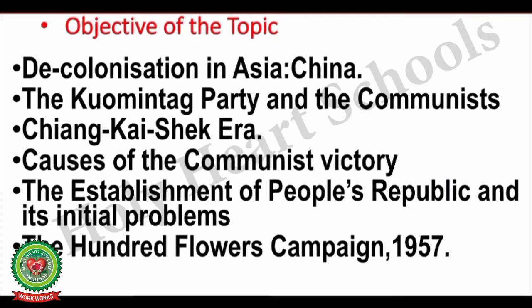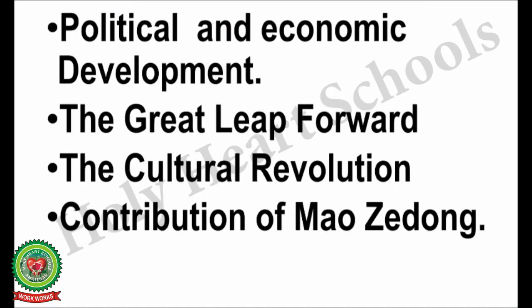Before we start, we will understand the objectives of the topic. The objectives are to understand decolonization in Asia, specifically the decolonization process in China. We will discuss the role of the Kuomintang party and the Communist Party, the Chiang Kai-shek era, causes of the communist victory, the establishment of People's Republic and its initial problems, and the Hundred Flowers Campaign of 1957. We will also cover political and economic development, the Great Leap Forward, the Cultural Revolution, and the contribution of Mao Zedong.